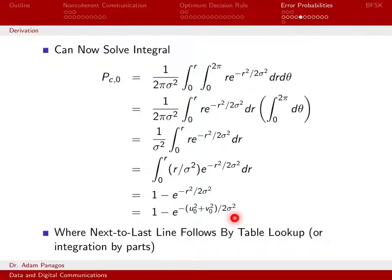The probability that we're correct, given signal zero was sent, equals this quantity. But keep in mind, U0 and V0 are actually random quantities, and that's what we need to handle next.